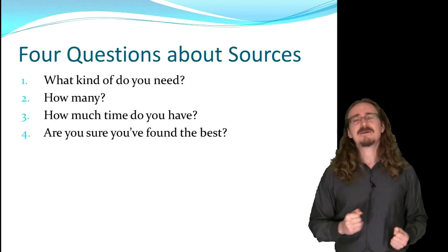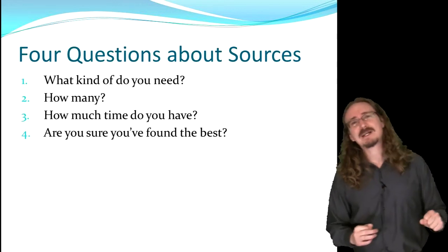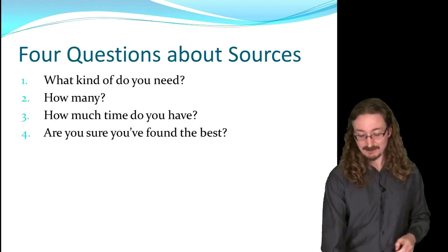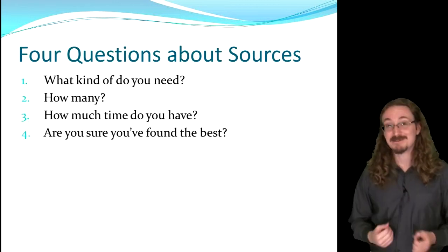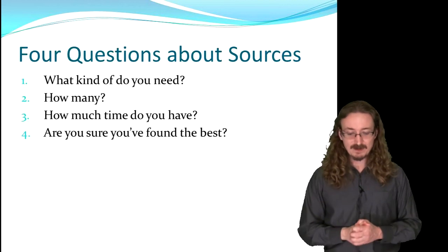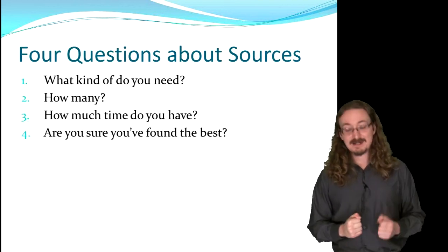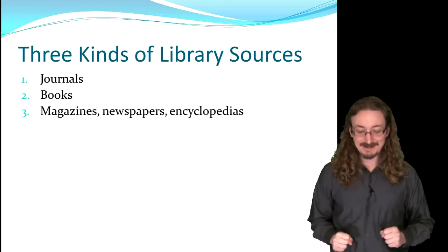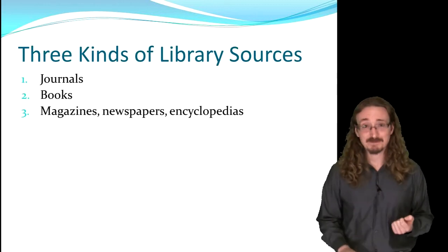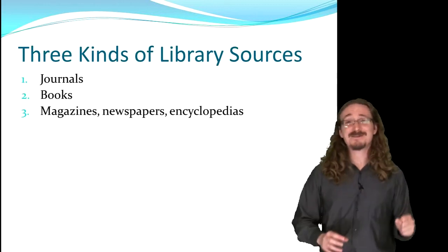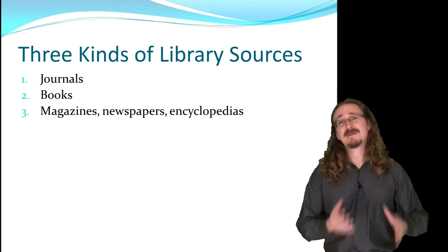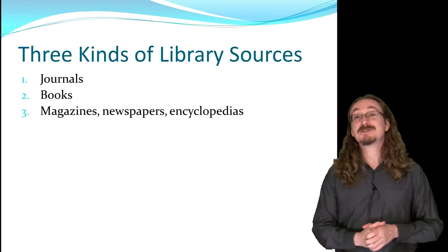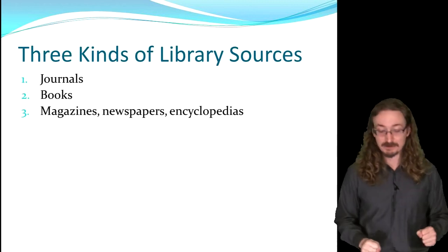The last question: how do you know that the sources you found are actually the best sources for that essay? That's a really big question and we'll get into it in the next lecture. Now, the three kinds of library sources to know about. First are journal articles — the par excellence sources. There's nothing that trumps a recent, up-to-date, accurate, peer-reviewed journal article from a reputable journal.